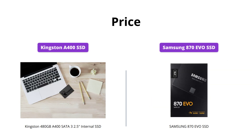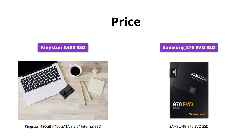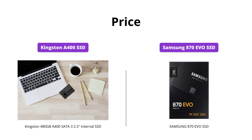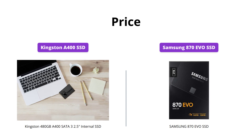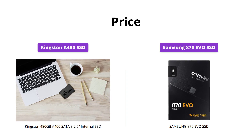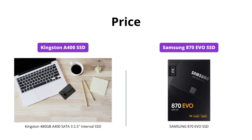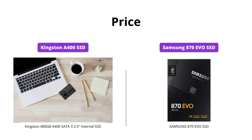The Samsung 870 EVO SSD is priced at $149, while the Kingston A400 SSD is priced at $25. If you're on a tight budget, the Kingston A400 SSD is an excellent choice.